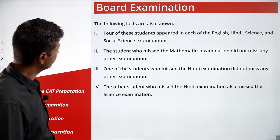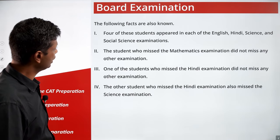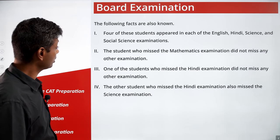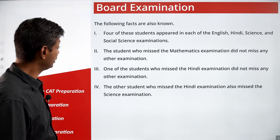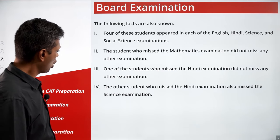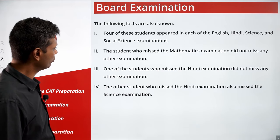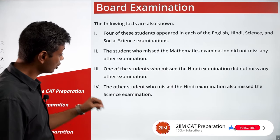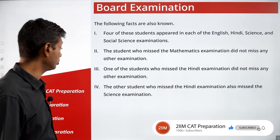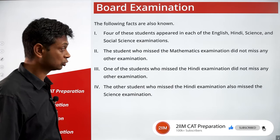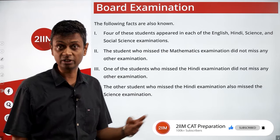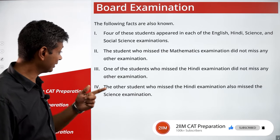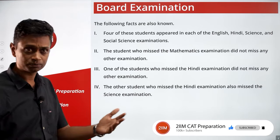Four of these students appeared in each of English, Hindi, Science and Social Science. The student who missed the math exam did not miss any other exam. One of the students who missed the Hindi exam did not miss any other exam. The other student who missed the Hindi exam also missed the Science exam. So two students missed Hindi — one missed nothing else, the other missed Science also.